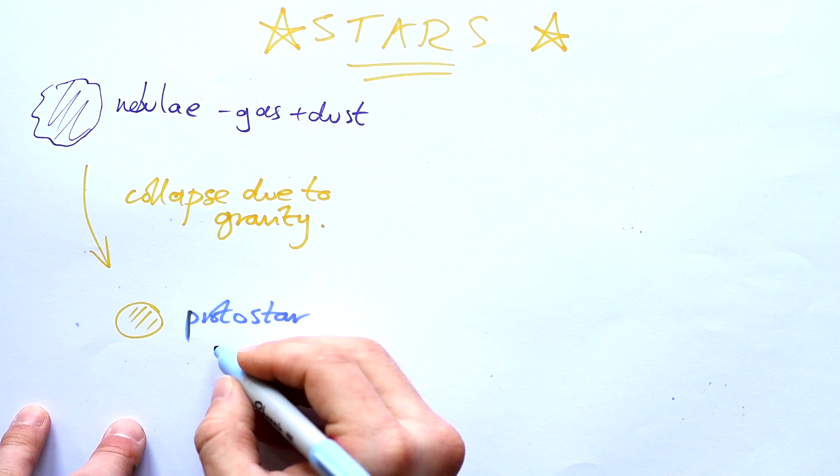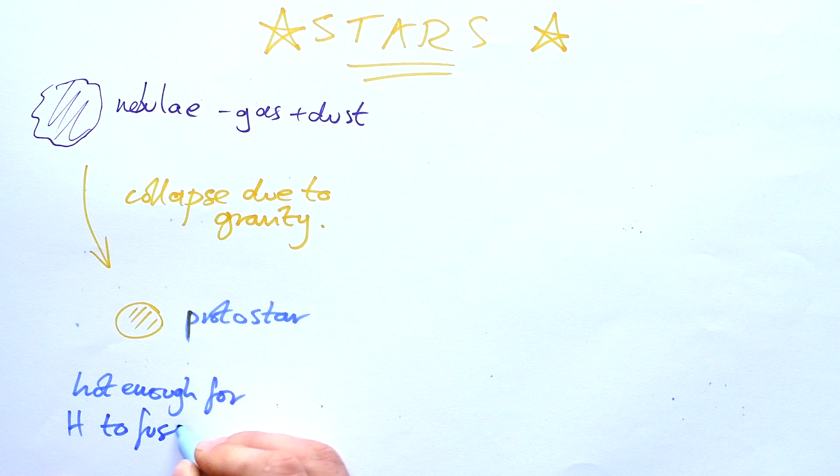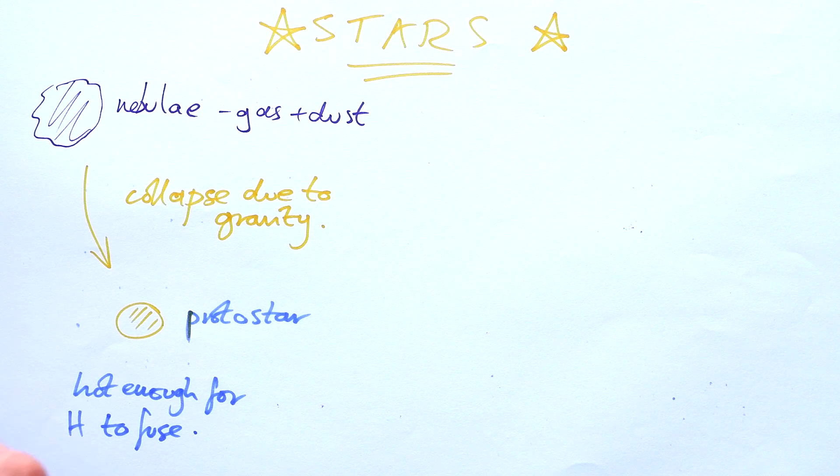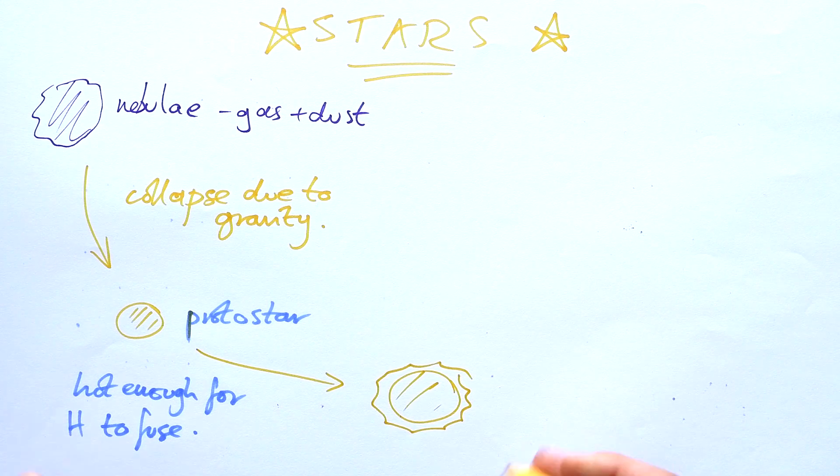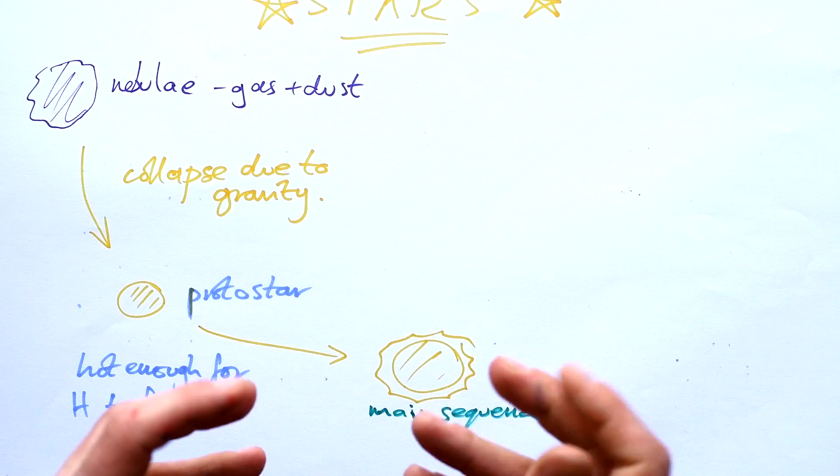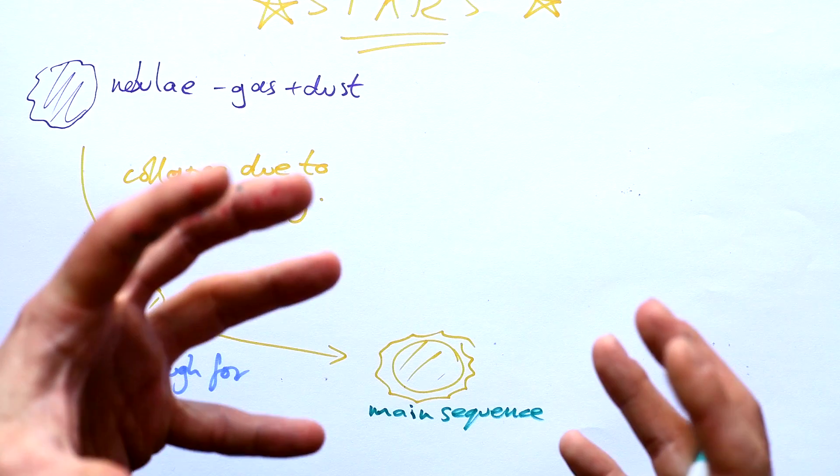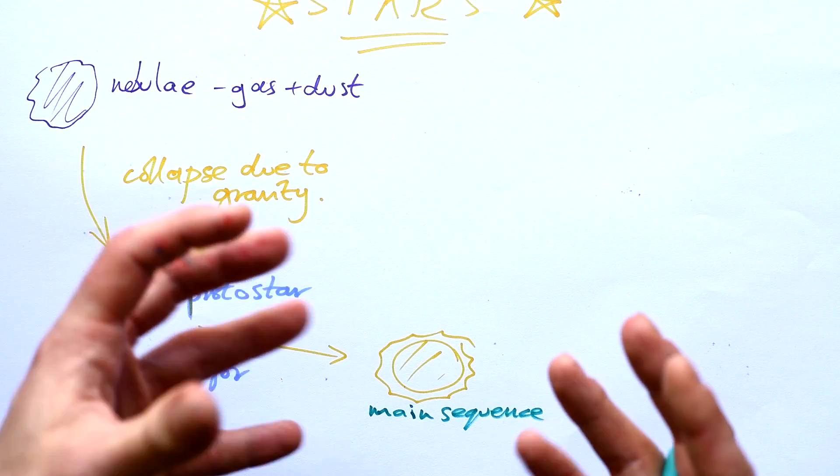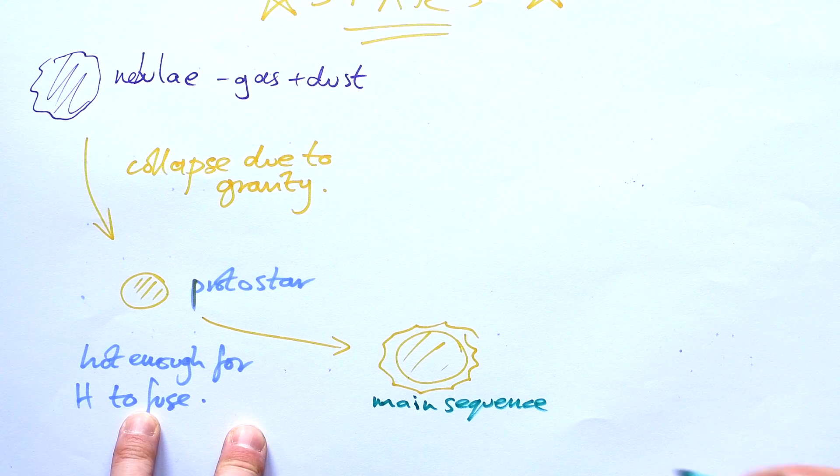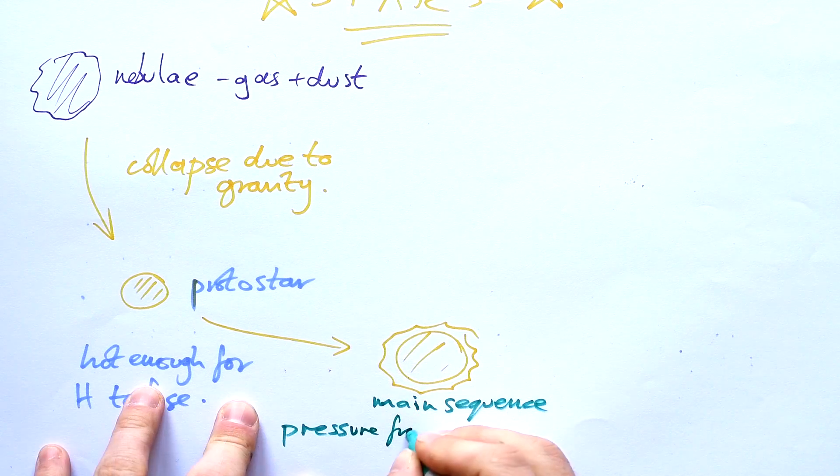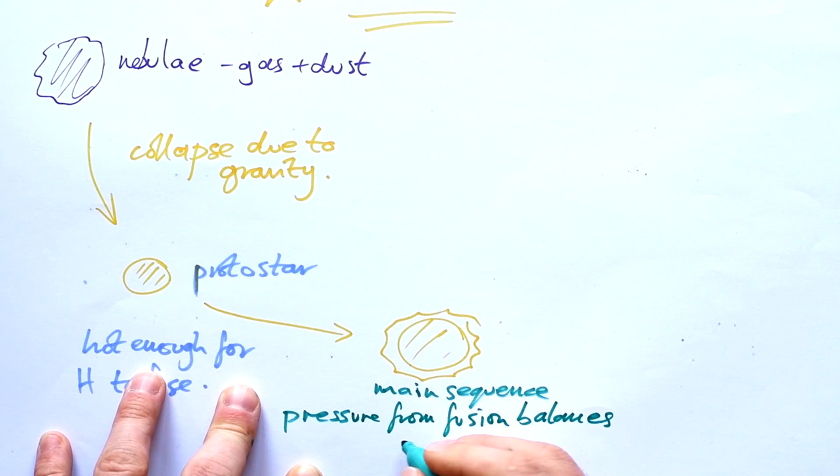This is hot enough for hydrogen to fuse, and so that's why they start glowing, burning bright as it were. Hydrogen is fusing into helium at a temperature of millions of degrees. They then go to your main sequence star. That's where our sun is at the minute, thank goodness. We have fusion which is creating pressure that's trying to explode the sun outwards, but gravity is keeping it in. So about main sequence stars, pressure from fusion balances with gravity.